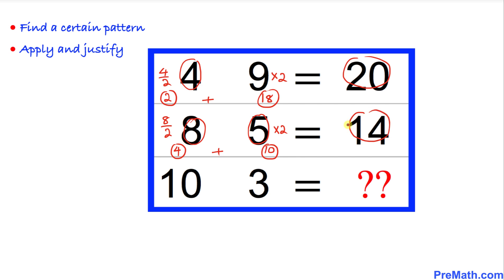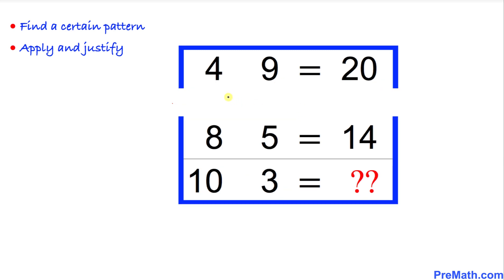And if we apply the same analogy over here, 10 divided by 2 is going to give us 5, and at the same time 3 times 2 is going to give us 6. So 5 plus 6 is going to give us 11. That means the number at this question mark is going to be 11.